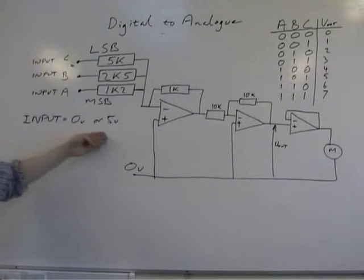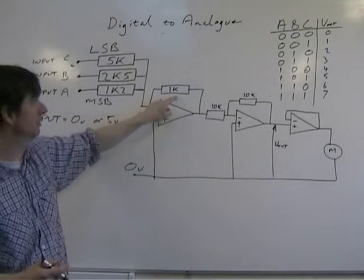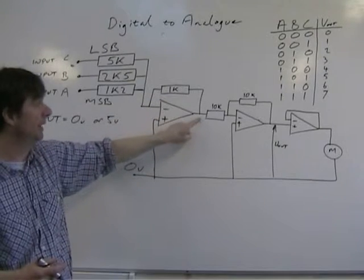They'll be 0 or 5 volts. So if you put 5 volts in there, because of the proportion of the resistors, that would be minus 1 volt there.